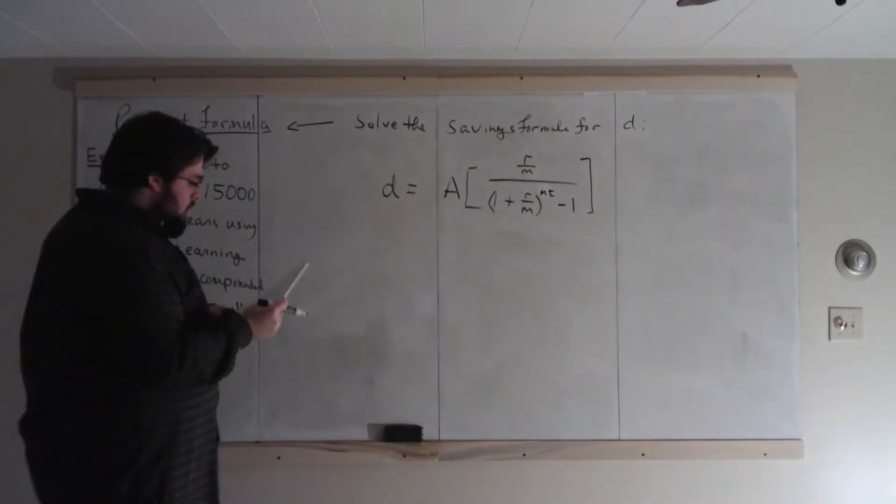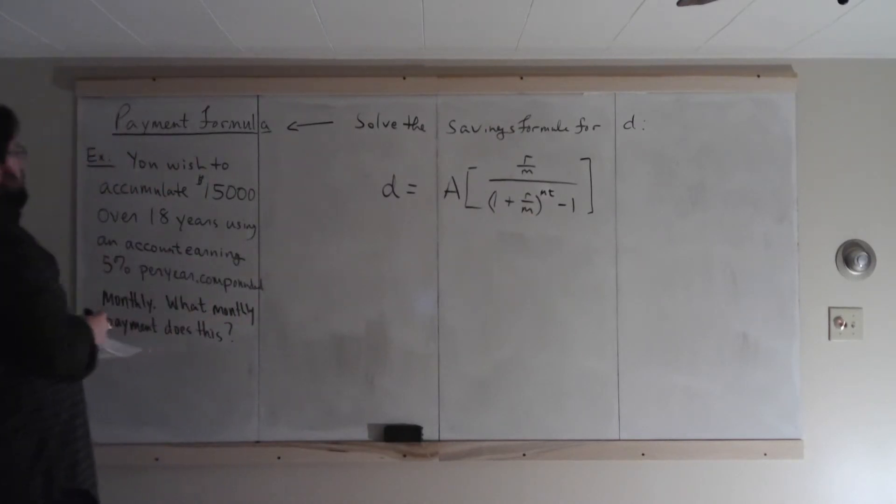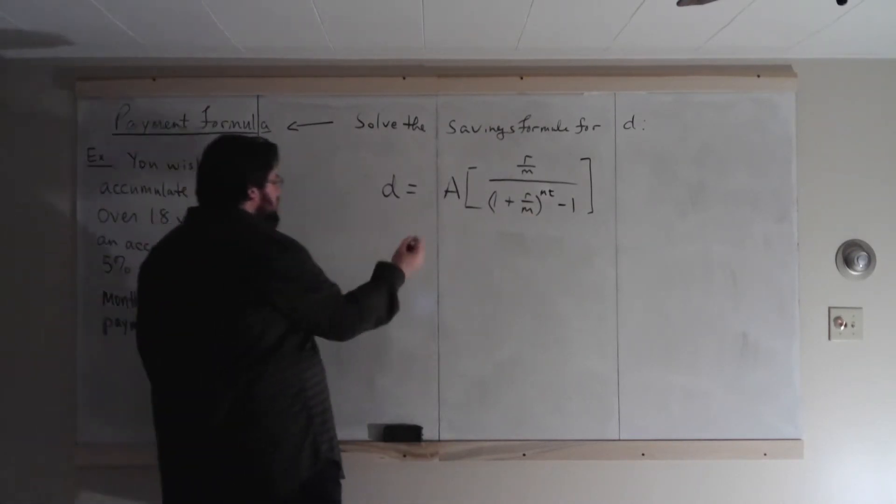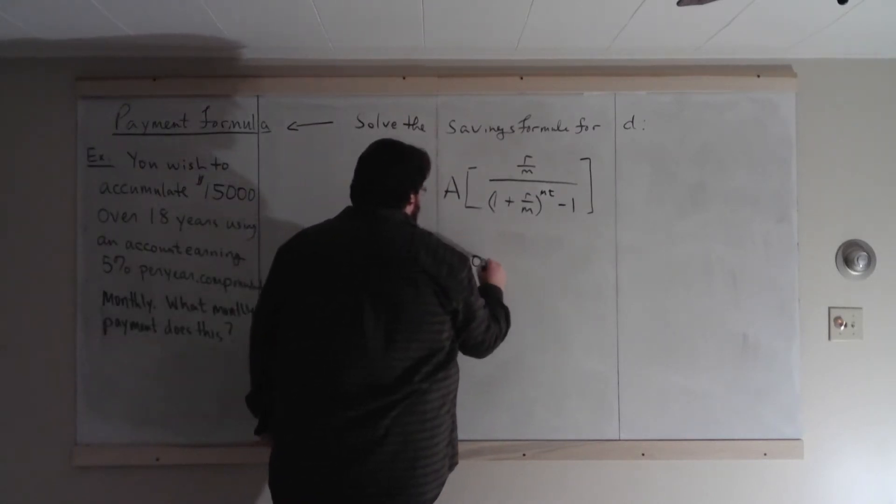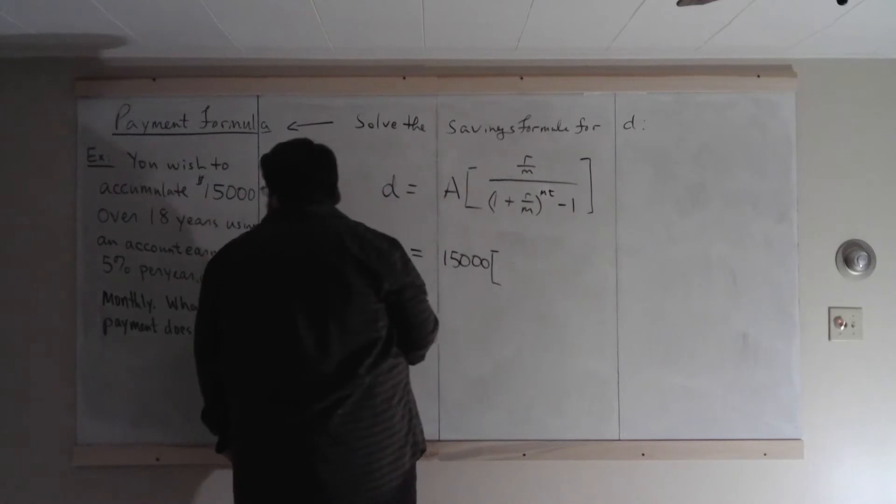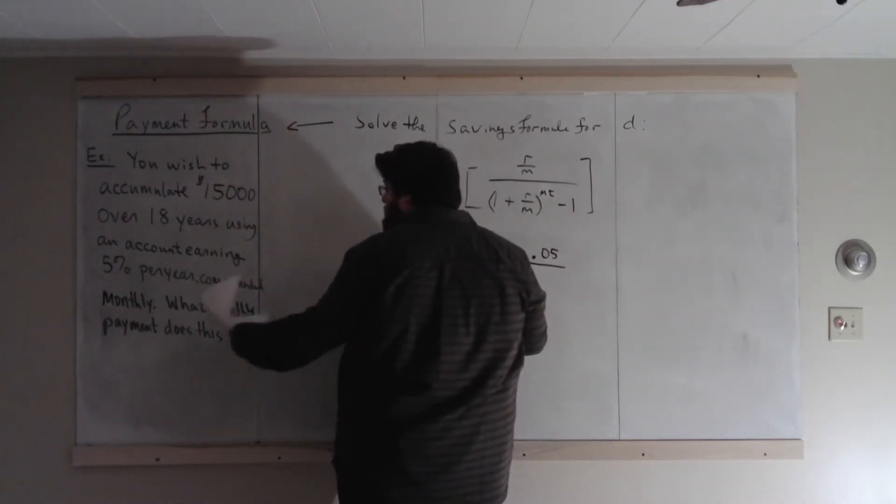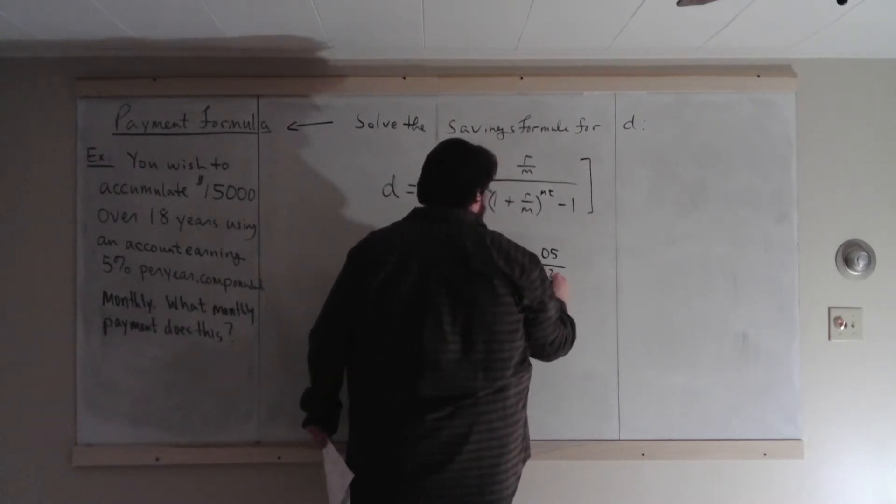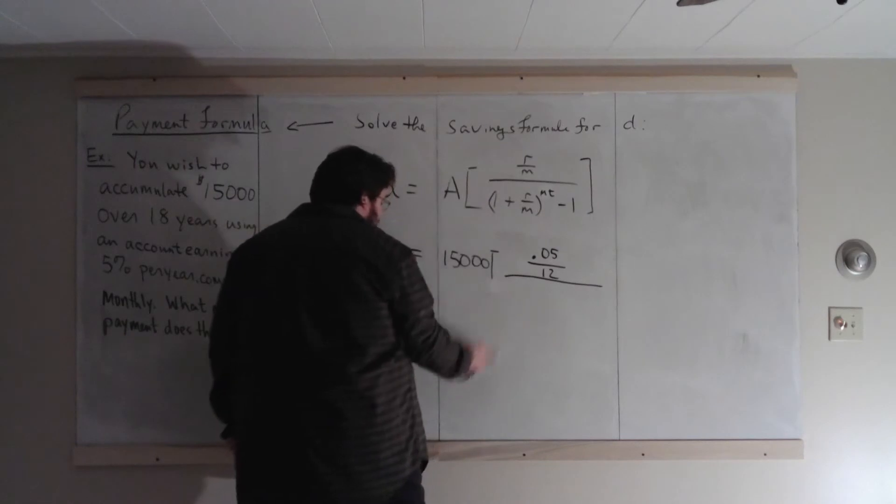So, and here, all we need to do is make our substitution. So let's do that. A equals 15,000. So here, I'll just say equals 15,000 times what? The rate, 5%. Compounding periods, 12. All over.